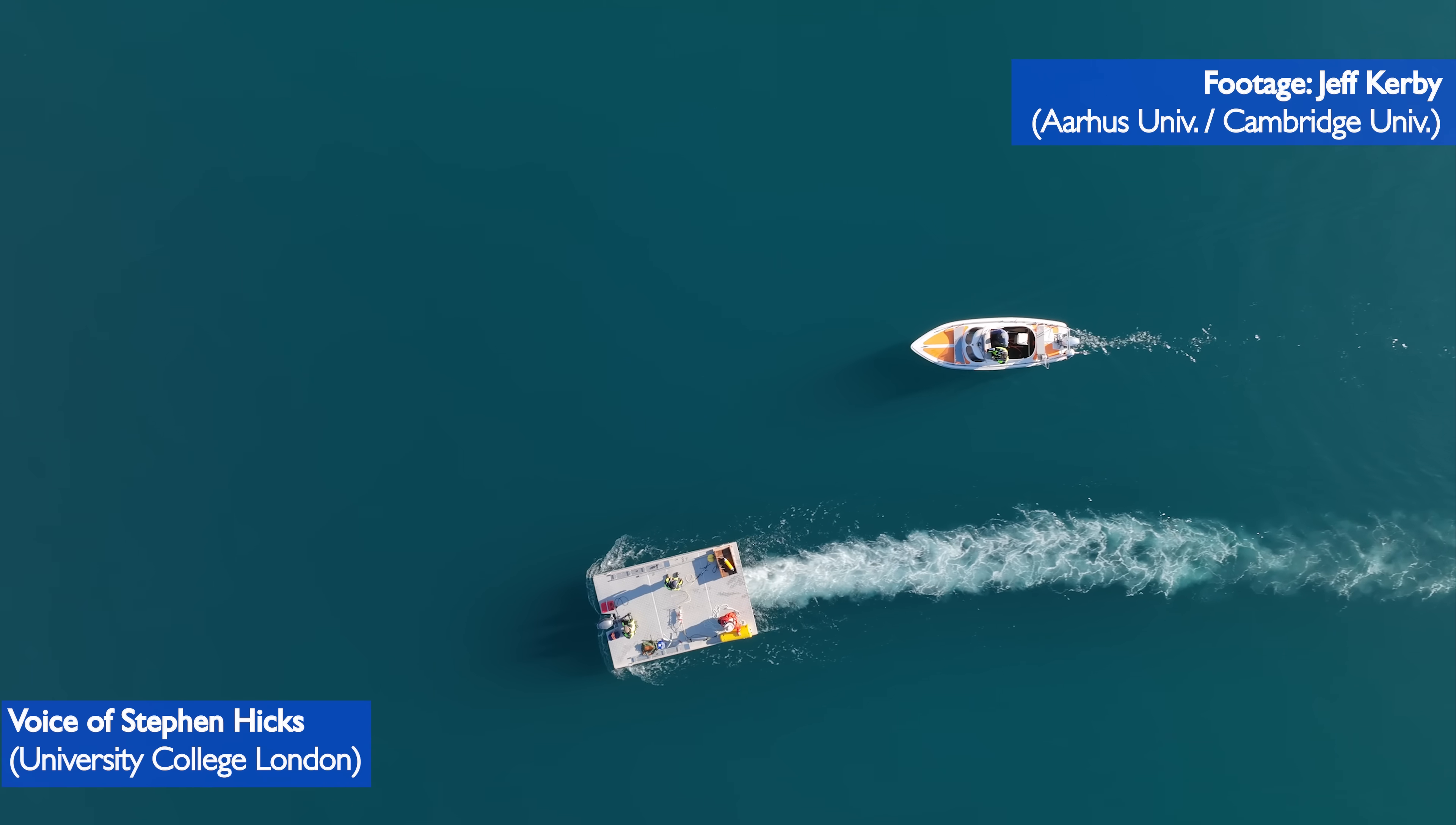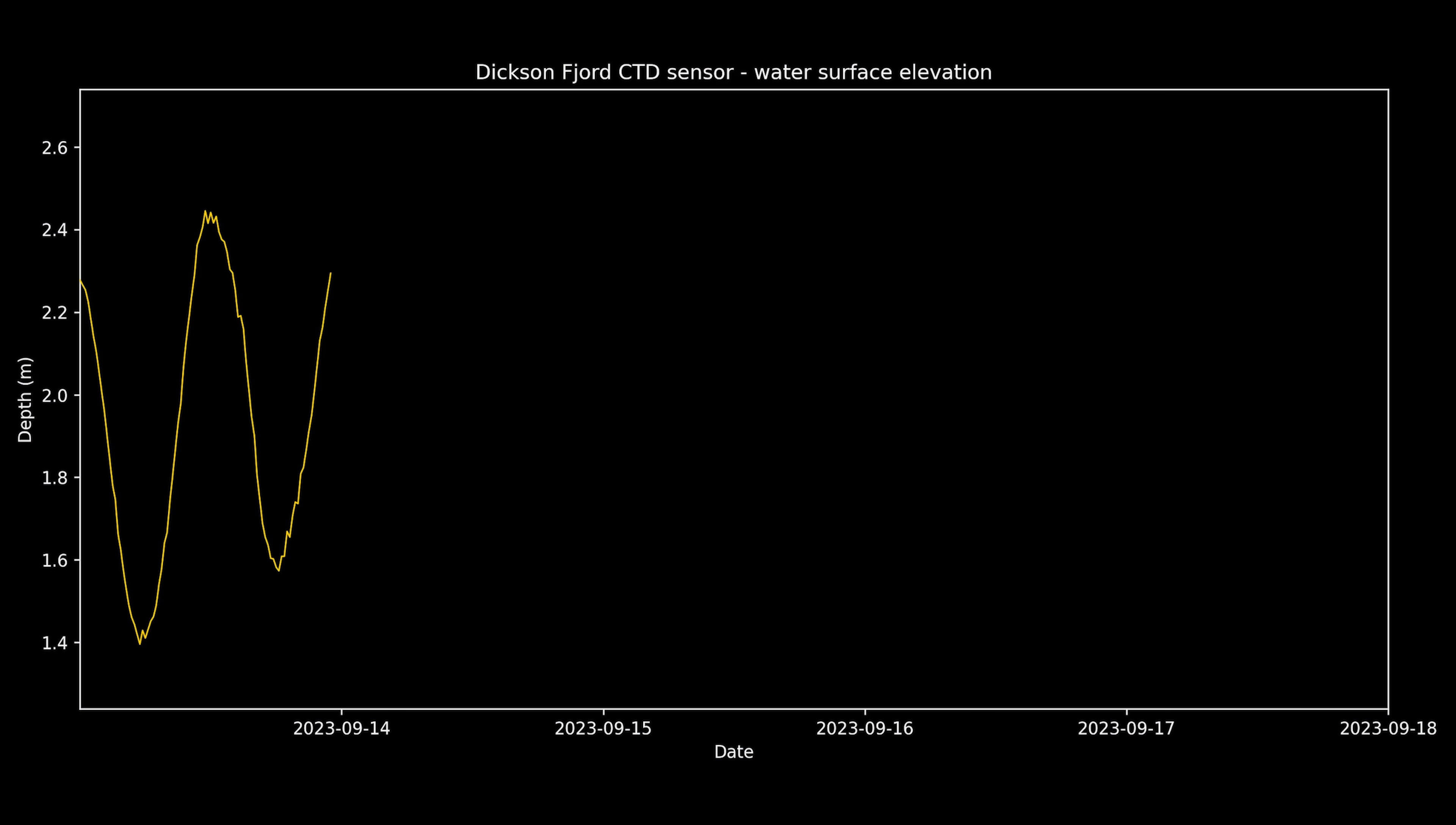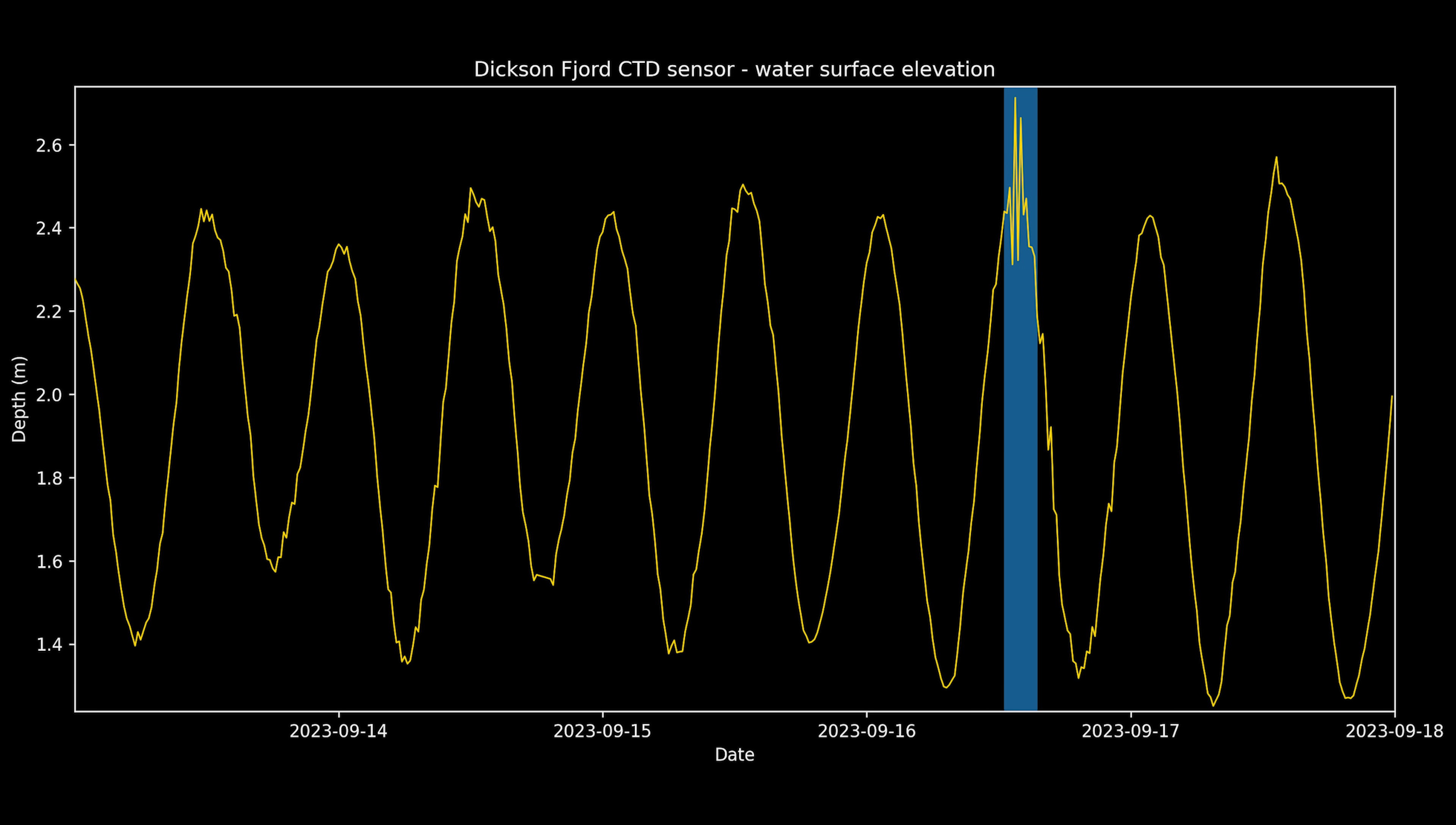We also knew that a major tsunami had happened because scientists previously installed some sensors in the fjord, including a gauge that measures the elevation of the water surface. Before the 16th of September 2023, the data from the water level gauge shows a twice-daily rise and fall due to the ocean tides. On the 16th though, we see a clear spike in the data due to the tsunami. However, this sensor only sampled the water elevation every 15 minutes. This meant that the biggest waves were not recorded.